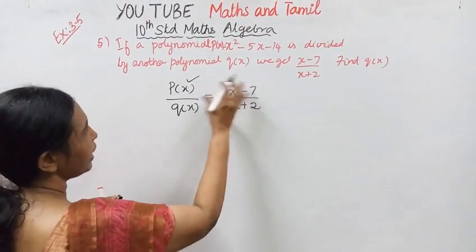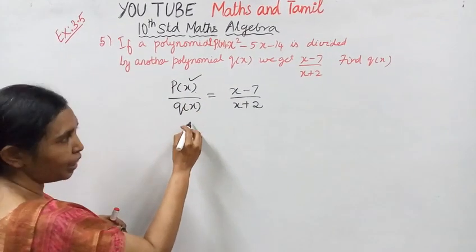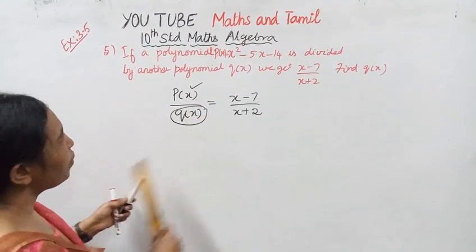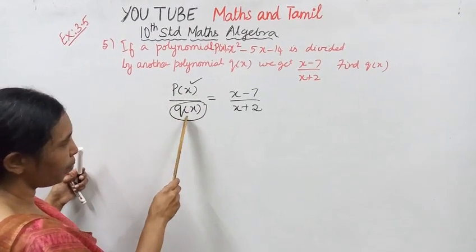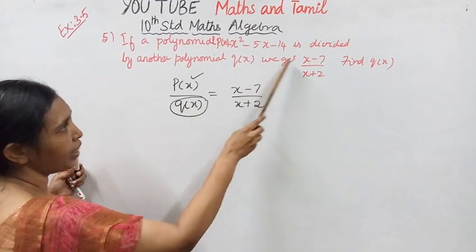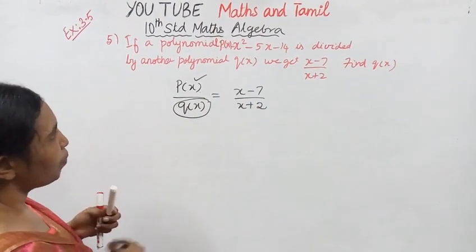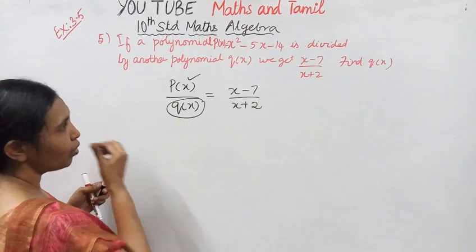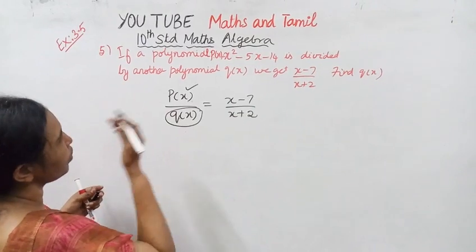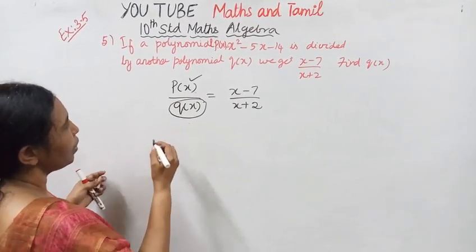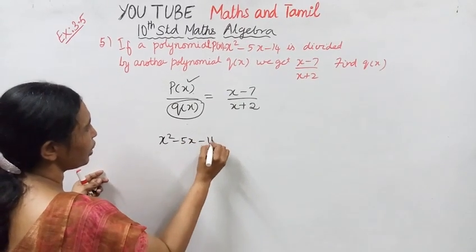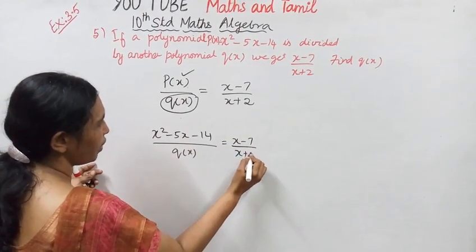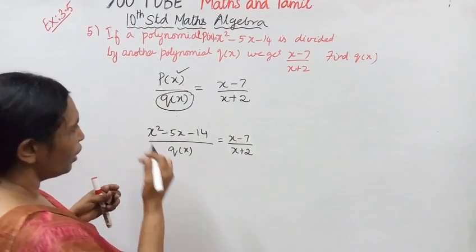If we get P of X, and P of X is divided by Q of X, then we get X minus 7 by X plus 2. Find Q of X. We get P of X plus 2, and then X plus 1 by X plus 2. Find Q of X plus 2.